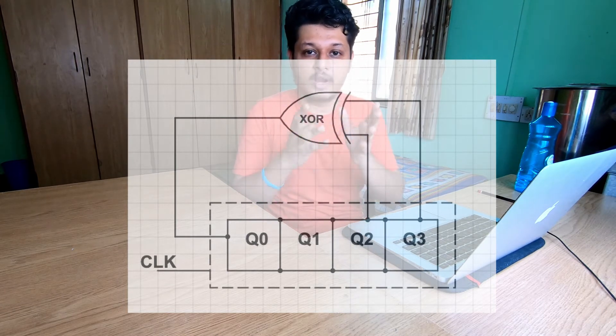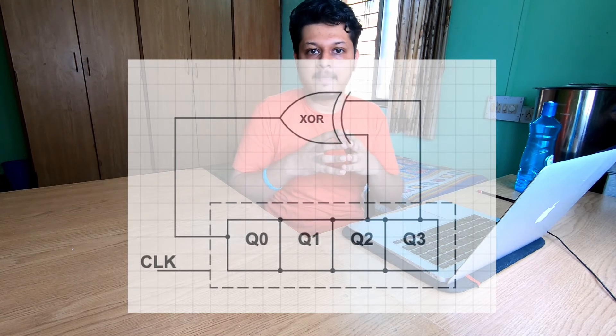You use XOR gate 7486 to provide this feedback. If you work out this thing at each and every rising edge of the clock, you will see the bit sequence repeats after length 15.